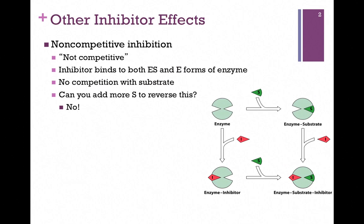In our last lesson we saw that in competitive inhibition, the substrate and inhibitor could not both bind at the same time because they were binding to the same site — binding was mutually exclusive. But in non-competitive inhibition, the binding of the substrate is not competitive with the inhibitor because they're binding to different sites.